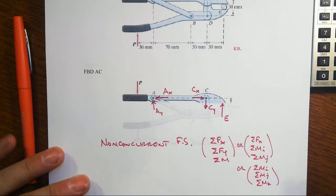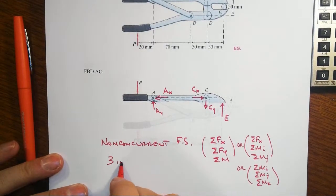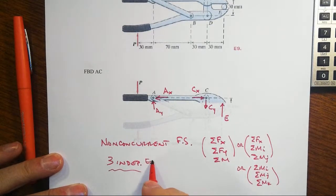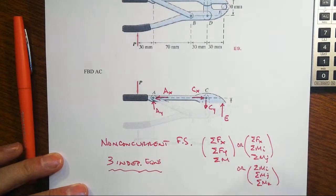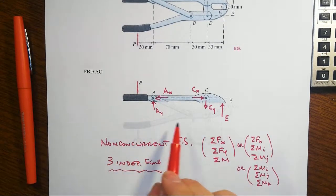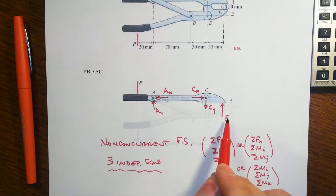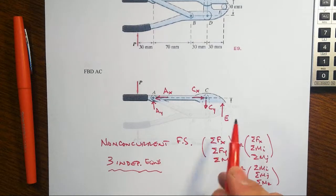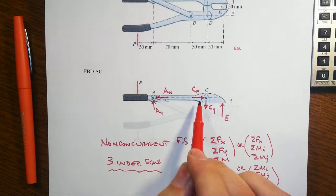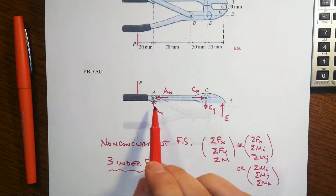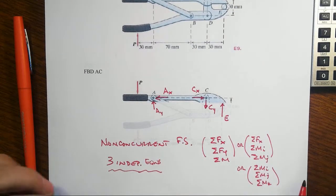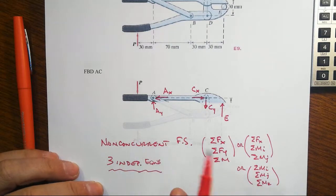But we only get three independent here, and that's it. So that means at most we can only come up with or solve for three unknowns. And we have a lot more than that in this particular free body diagram. We know the direction of the force at E, but we don't know its magnitude, so that's one unknown. I don't know Cx nor Cy, so there's two more unknowns. And I don't know Ax nor Ay, so that makes five unknowns so far in this particular free body diagram.